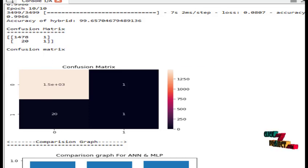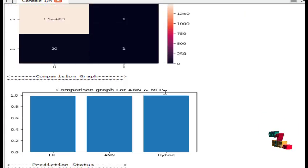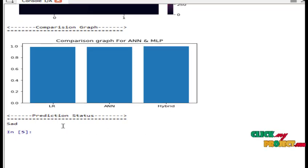Confusion matrix. Confusion matrix is based on our label values - that is zeros and ones. Comparison graph for logistic regression, ANN, and hybrid. Prediction status: prediction status is like the given post is happy or sad, that is depressed or not depressed.